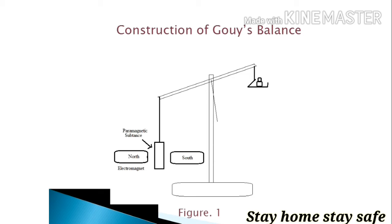As the name suggests, it is a balance. You can see in the diagram it is like a balance. On one side you have a pan, on another side the capillary is suspended by means of wire.